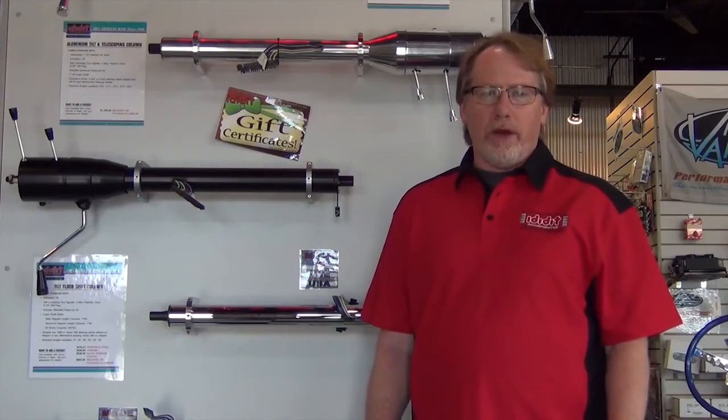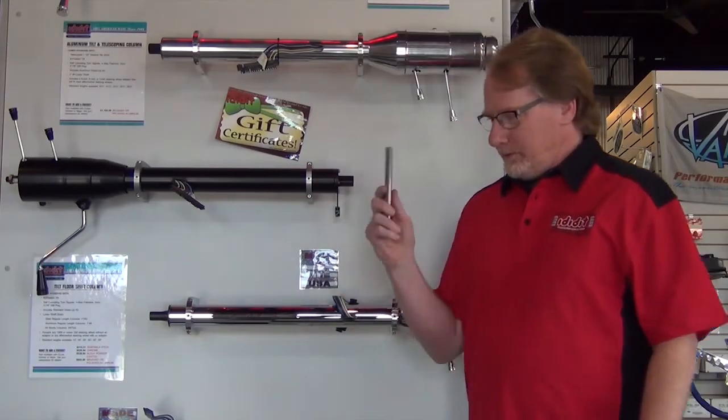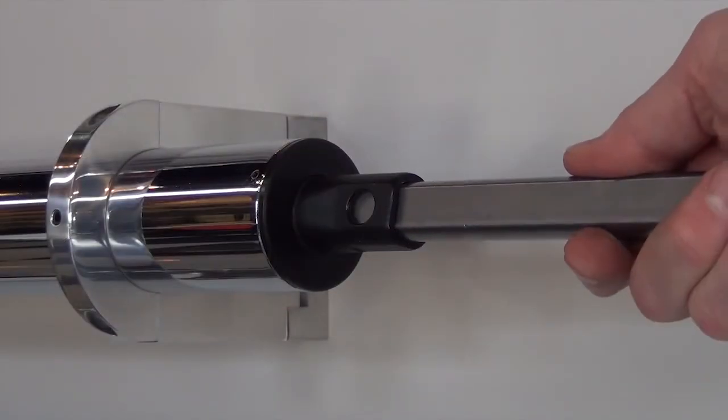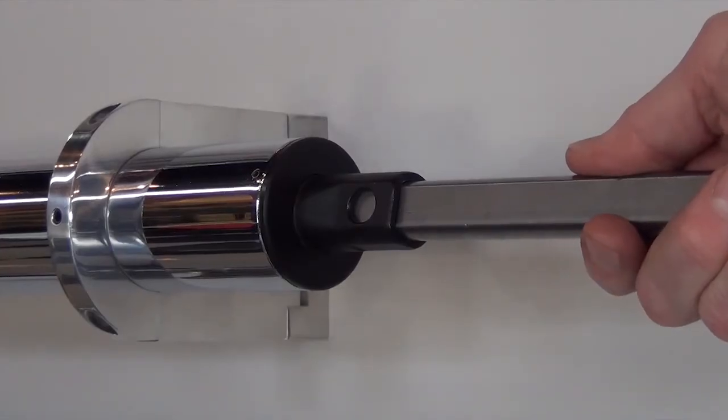We're going to show you a really common practice in the industry today, and then we're going to show you why we don't want you to do it. And that is putting a three-quarter DD shaft up inside the hollow one-inch DD shaft of a lot of steering columns.